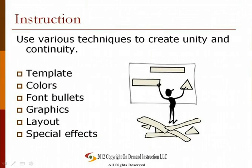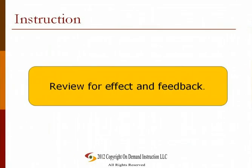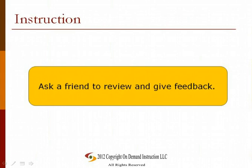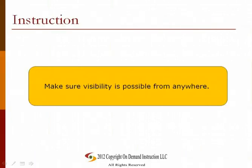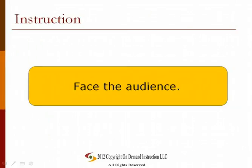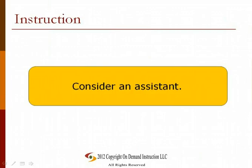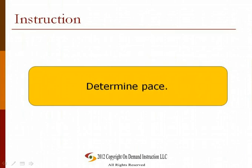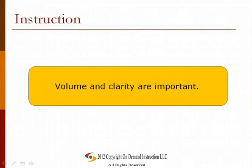Here are some suggestions on how to relay your presentation to your audience. Review the presentation for overall effect and impact, and ask a friend to provide feedback. Conduct a dry run with all the equipment you will use. Place your screen or display for a clear line of view from all parts of the room. Presenters should face the audience, preferably standing in front of the room near the screen. Consider using an assistant to operate the computer and advance the slides. Use prepared notes to expand on key points identified in the slides. Determine an appropriate pace — going too fast is always a problem. Volume and clarity of voice are important, and eye contact should be established while the pace allows for audience questions.